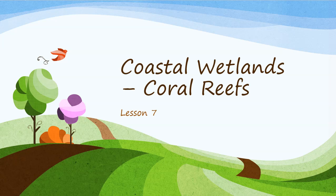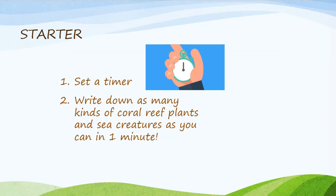Welcome to Year 9 Geography. My name is Gabrielle and this is Lesson 7 in our course on Ecosystems. In this lesson we're going to be learning about coastal wetland systems and coral reefs. Before we begin our lesson let's do a starter activity. Set a timer on your phone or computer and write down as many kinds of coral reef plants and sea creatures as you can in one minute.